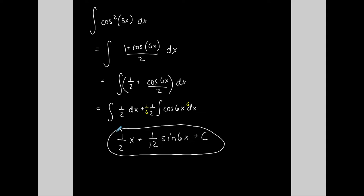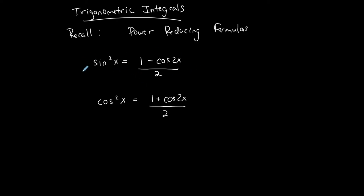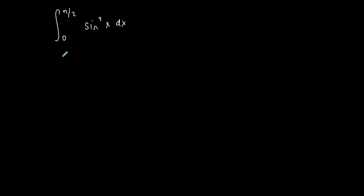Much easier — less work than the last case. Just a simple power reducing formula and separation, with no extra sine to complicate things. Now let me show a definite integral. I'm going from 0 to π/2 of sine to the fourth of x, dx. I have an even exponent in just sine, so I can use the power reducing formula for sine, but it deals with sine squared. So I'll rewrite sine to the fourth as sine squared, squared.